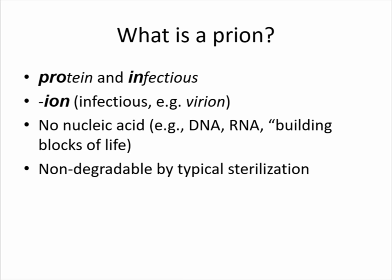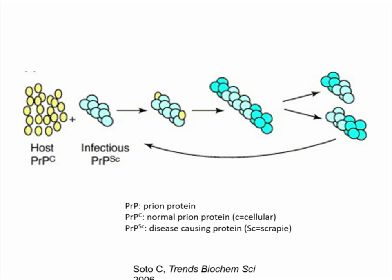The way prion disease works is that we all have normal prion proteins — that's the yellow PRPC that we have in our body. Most of it's in our brain, some of it's in our stomach. We don't know exactly what it does, but it probably has some housekeeping function in the brain. For whatever reason, we come across an infectious PRPSC — which stands for scrapie protein — that's the prion protein that causes the disease.